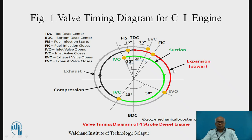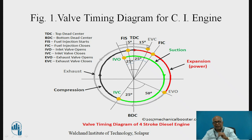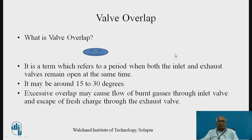Expansion continues up to before BDC because the exhaust valve opens much earlier, and the exhaust stroke starts from there. The exhaust continues even after BDC so that the inertia will drive the exhaust charges outside. That is the valve timing diagram for the CI engine — four-stroke compression ignition engine.